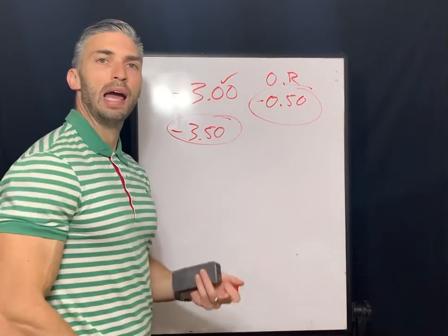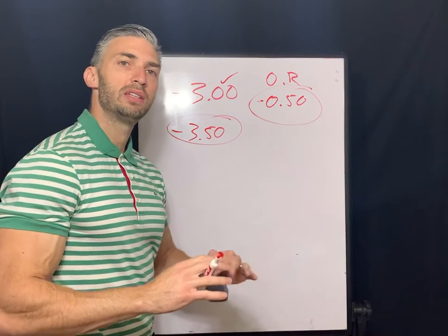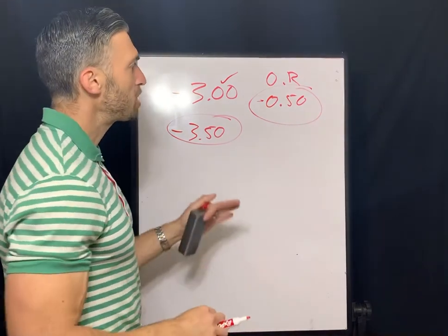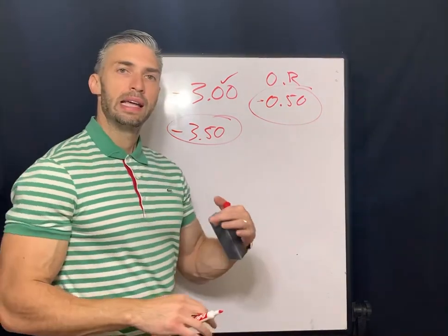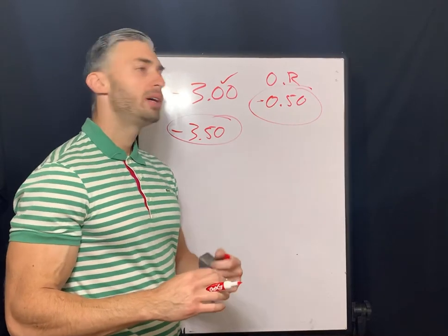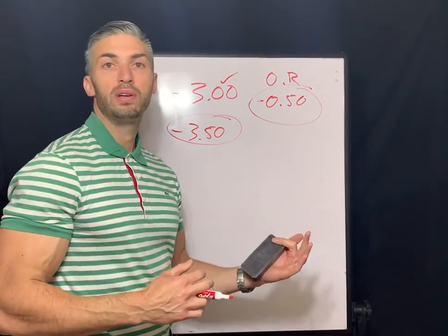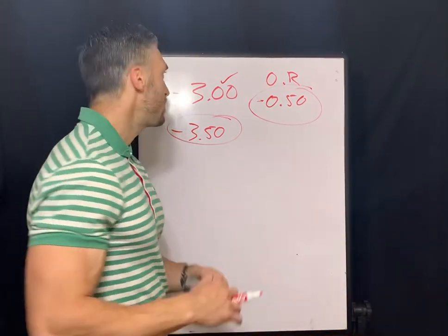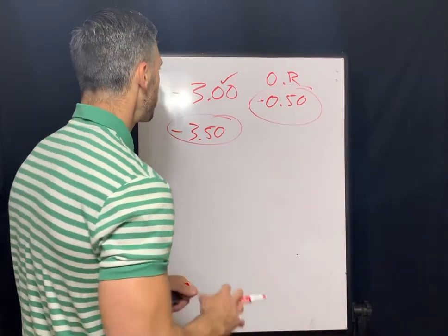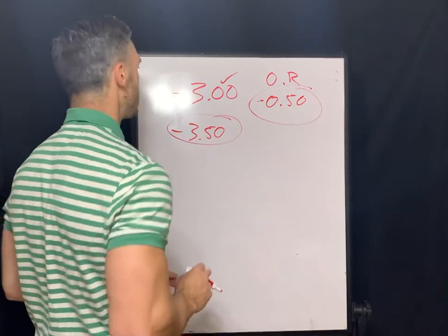So your base curve diameter, you can't change that because then it may change the power, especially once we get into talking about gas permeable lenses. Because we know if we're steepening the base curve we have to add minus power to it. If we're flattening it you have to add plus. So you get different dynamics like that. But this is just a basic spherical example.